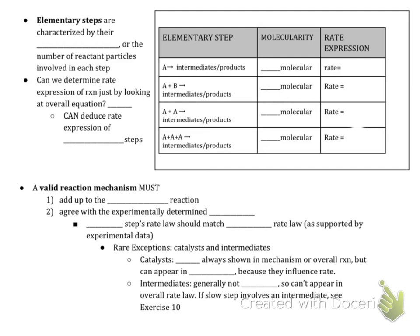Elementary steps are characterized by their molecularity. Molecularity is the number of reactant particles involved in each step. Wikipedia has a good page on molecularity if you want to read further. We cannot determine the rate expression of a reaction just by looking at the overall equation — it really depends on which step is slow and which is fast. But we can deduce the rate expression of elementary steps because they describe collisions at the particle level.